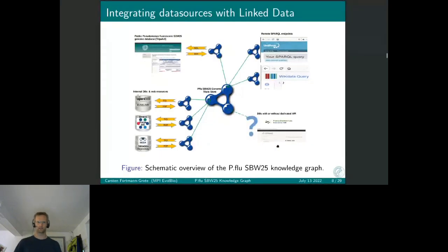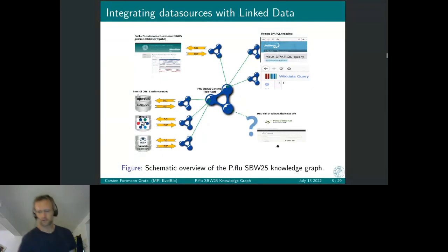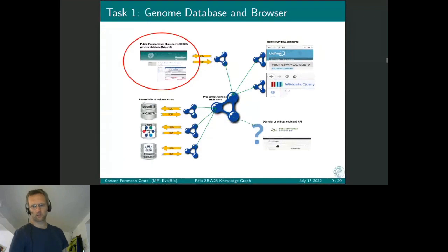Here's the big picture of our system. At the center is the PFlu SBW25 genome triple store, which is a rewrite of the GFF3 file generated by merging various annotations into RDF format, served through a SPARQL endpoint. Through federated queries, we can reach out to external data sources that provide SPARQL endpoints, and also to our internal sources, most prominently the public Pseudomonas fluorescens SBW25 genome database.